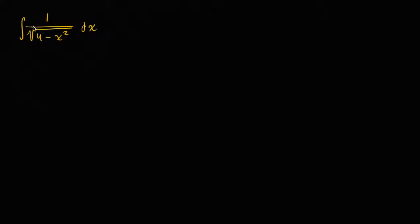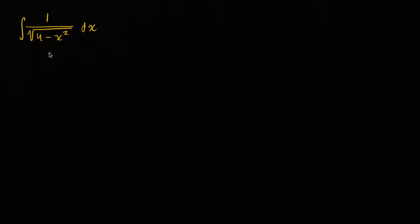Let's say that we want to evaluate this indefinite integral right over here. You immediately notice there's the square root of four minus x squared in the denominator. You could try using substitution, but it really doesn't simplify this in any reasonable way. How do you tackle this?